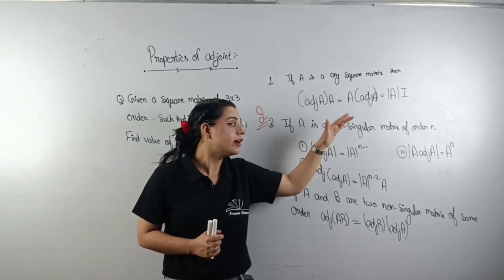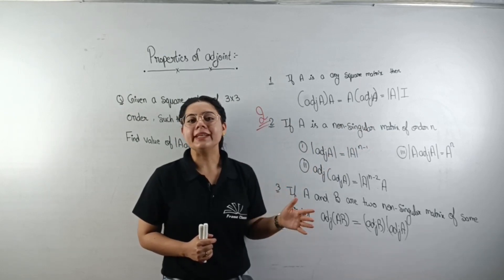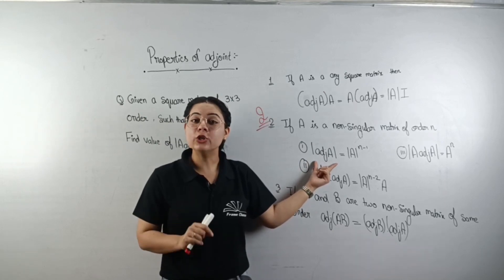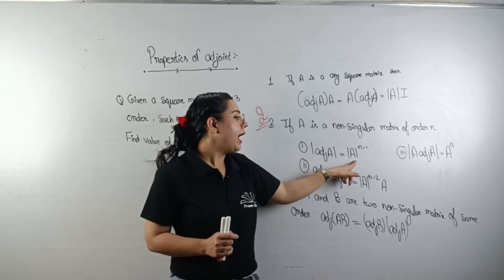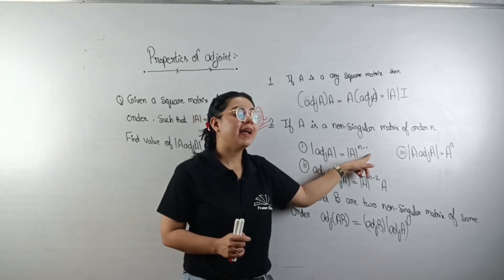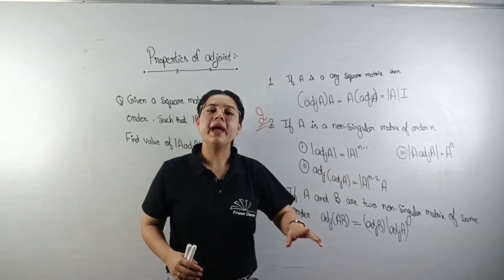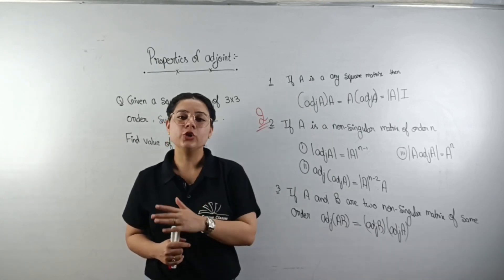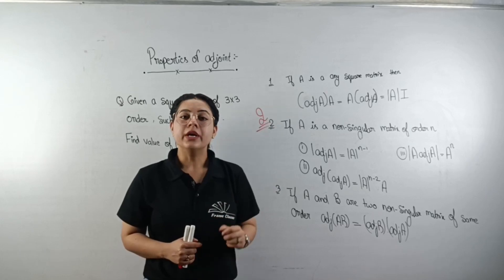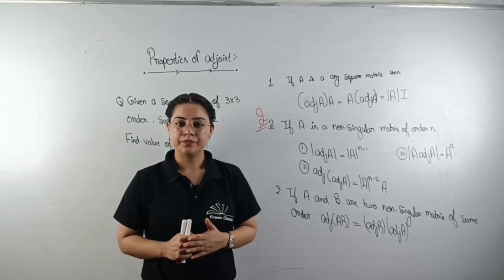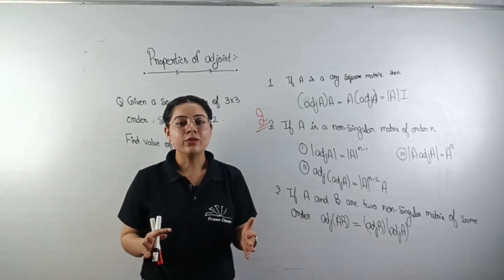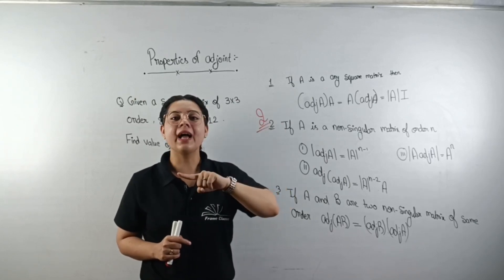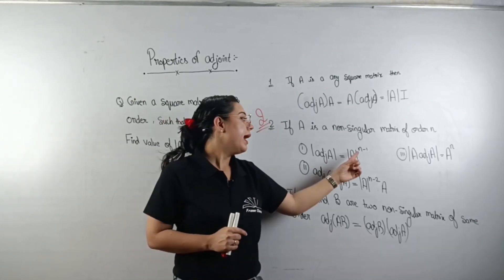Assume the order of the matrix is n. Then the determinant of adj(A) is equal to |A| to the power of (n−1). I have told you that to find the determinant of the adjoint, you do not need to separately calculate the adjoint and then its determinant.